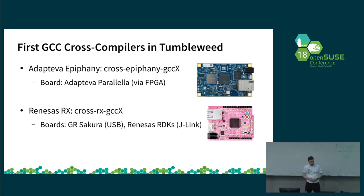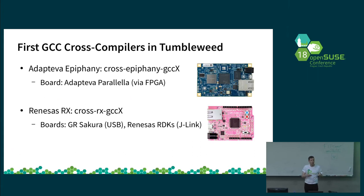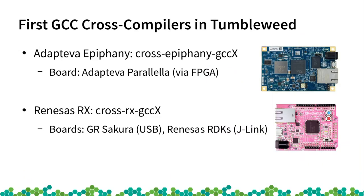About two years ago at the OpenSUSE conference in Nuremberg, I presented the first real cross-compiler work. We had some earlier cross-compilers for developing kernels for systems running OpenSUSE — so you could take an x86 system and develop kernels for s390, Power, or ARM. Now it was also possible to develop with a standard C library for non-OpenSUSE targets. The first was the Epiphany target used for the Parallela board, and the second was for RX (Renesas Extreme), for the Sakura board and others.